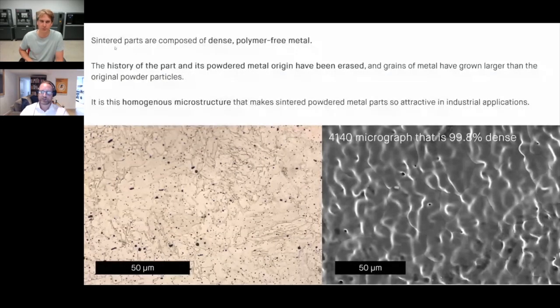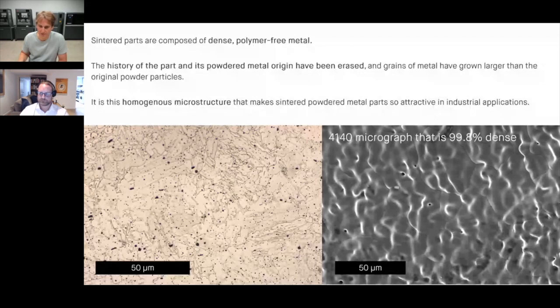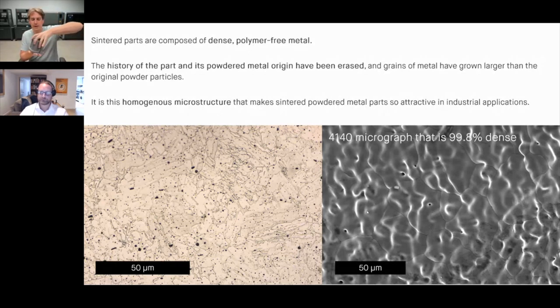Question: how do mechanical properties of the steels you print with compare to a cast component? Let me cover material properties in general. These parts don't have the same stigma as, say, a plastic FDM or SLA printed part because we use a sintering process. Parts are printed layer by layer, but what comes out first is a green part — a combination of metal powder and binder. It has about the consistency of a cracker. If I dropped it, it would probably break.